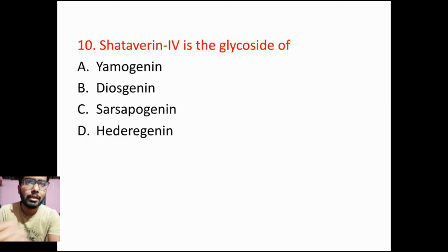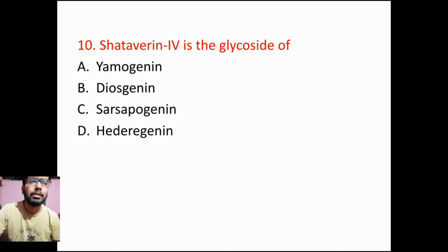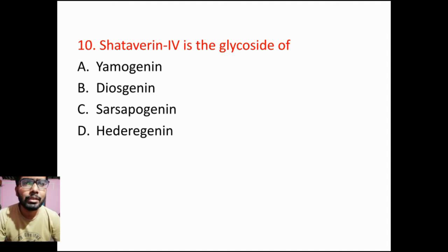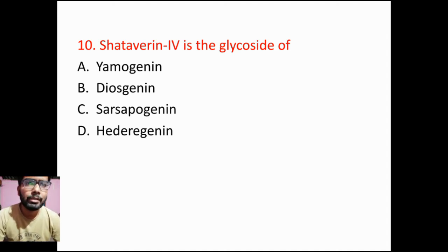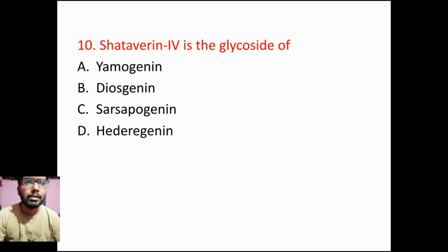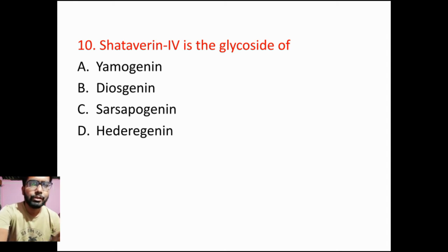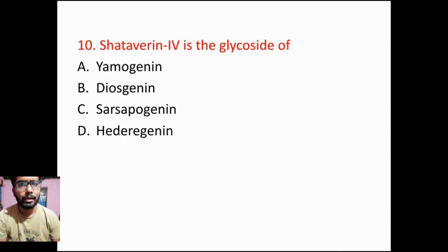Then coming to the last question: Shatavarin 4 is a glycoside of — Option A: yamogenin, Option B: diosgenin, Option C: sarsapogenin, Option D: heterogenin. Shatavarin 4 is the glycoside of sarsapogenin. So option C will be the right answer.